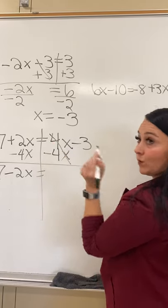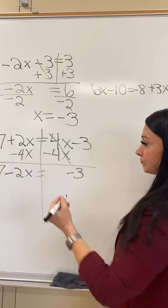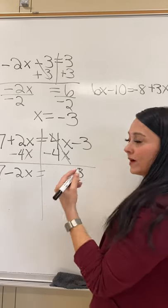4x minus 4x, that goes away. That's why I did that. And then I bring down my negative 3. Also, just a quick note.